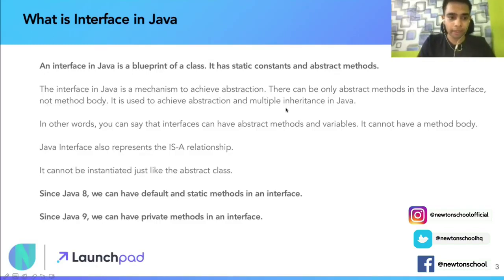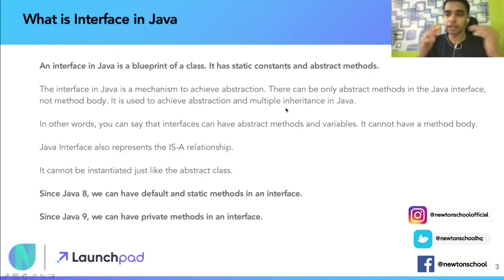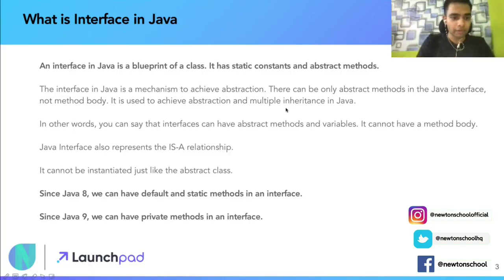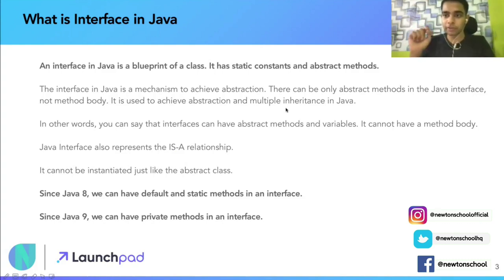Java interface also represents an is-a relationship. Just like inheritance has an is-a relationship and aggregation has a has-a relationship, interfaces similarly represent an is-a relationship. Apart from that, an interface cannot be instantiated, just like an abstract class. Please watch the previous video as it is a prerequisite for this one.